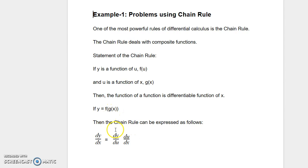The chain rule states that dy/dx is equal to dy/du times du/dx. So let's look at an example to better understand this chain rule.